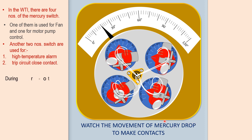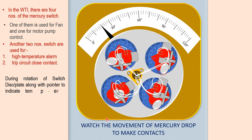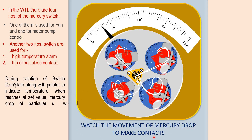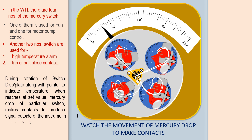During rotation of the switch disk or plate along with the pointer to indicate temperature, when it reaches the set value, the mercury drop of the particular switch makes contact to produce a signal outside the instrument to act accordingly.